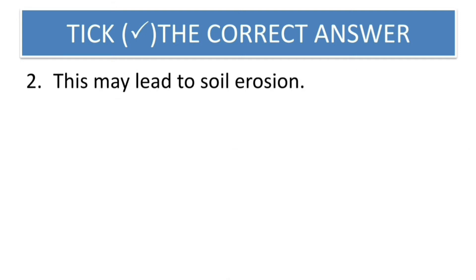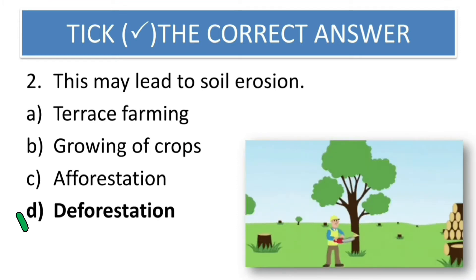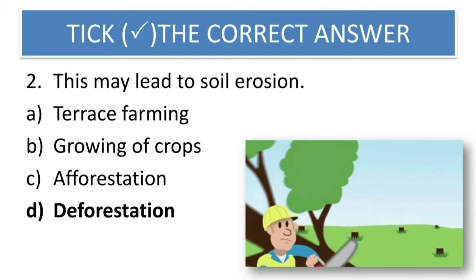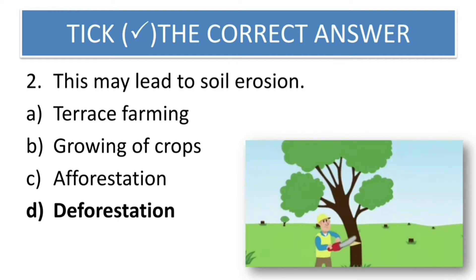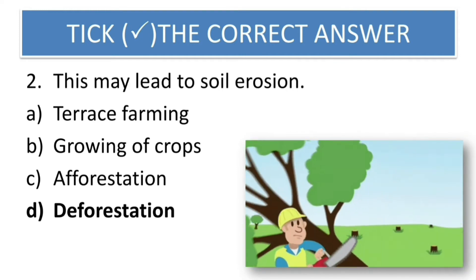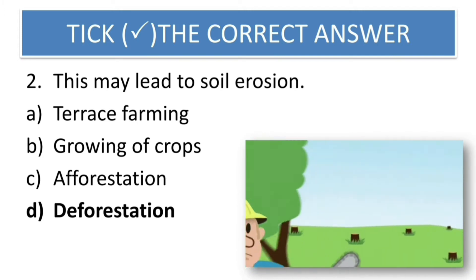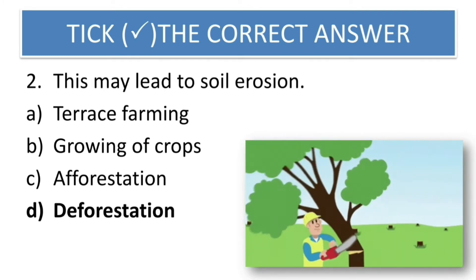Second question: These may lead to soil erosion — options are terrace farming, growing of crops, afforestation, deforestation. The correct answer is deforestation. When you cut the trees, there is nothing to hold the soil. When there are natural calamities like a storm or a flood, the good soil gets washed away. We should plant trees to avoid soil erosion. If you cut the forest area, then the soil will get washed away very easily.